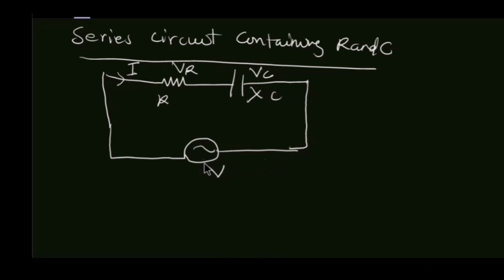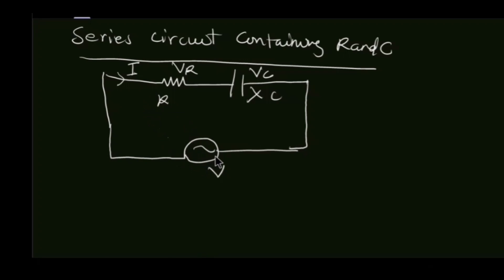I have a total source voltage which is an AC source voltage producing a current I. This current I is passing through a series connection of a resistor and a capacitor. How do we find the total impedance in such a circuit, as well as the phase difference between the current and the voltage? Since in an AC circuit, the current and the voltage are not in the same phase.